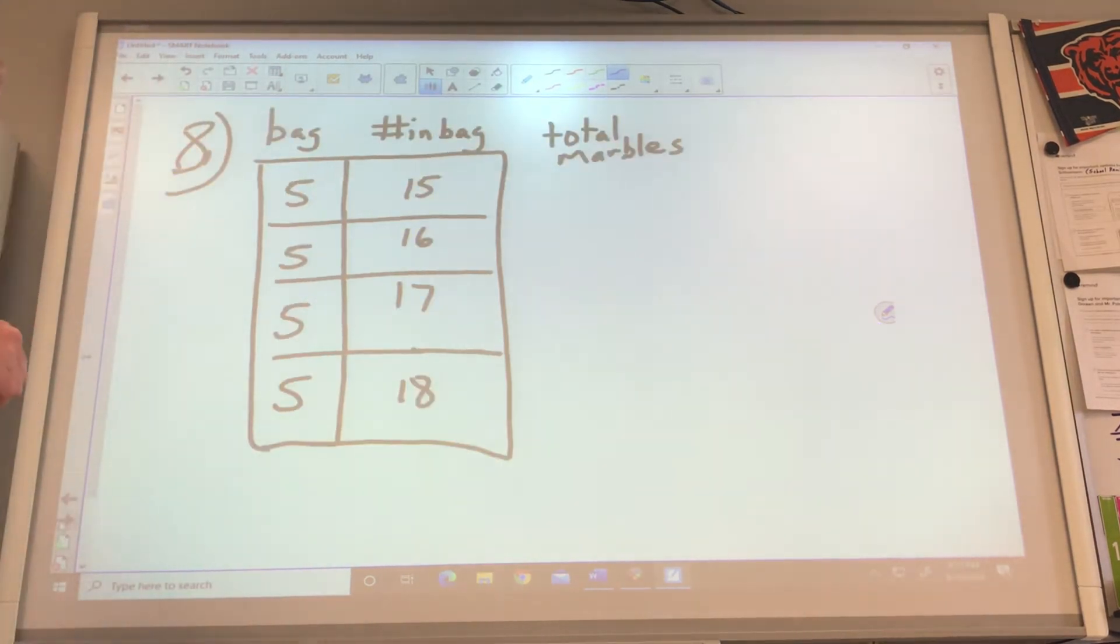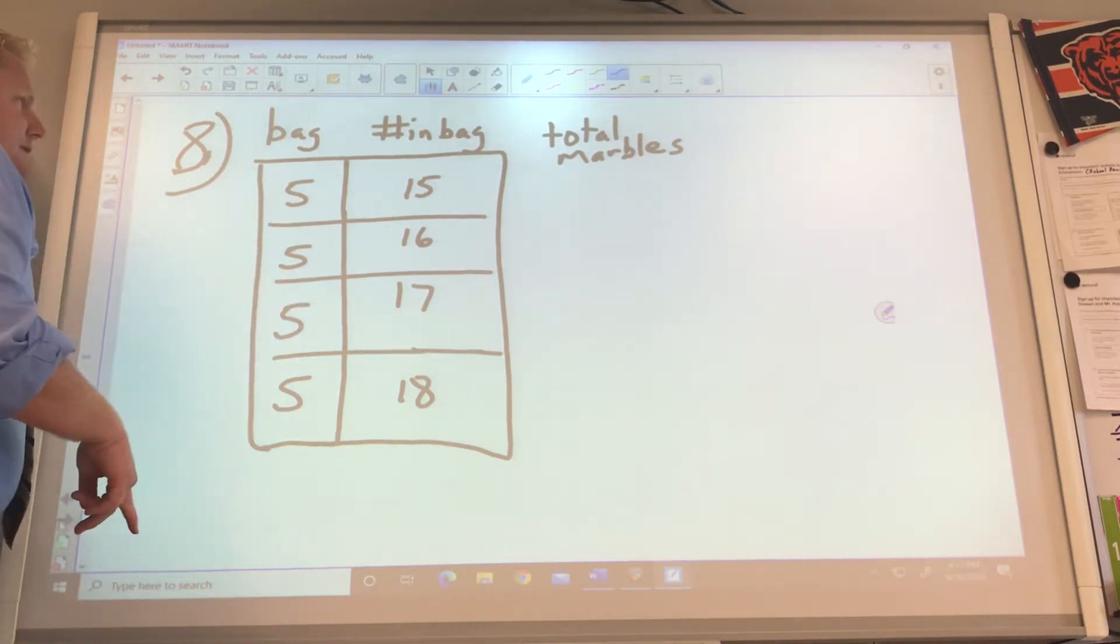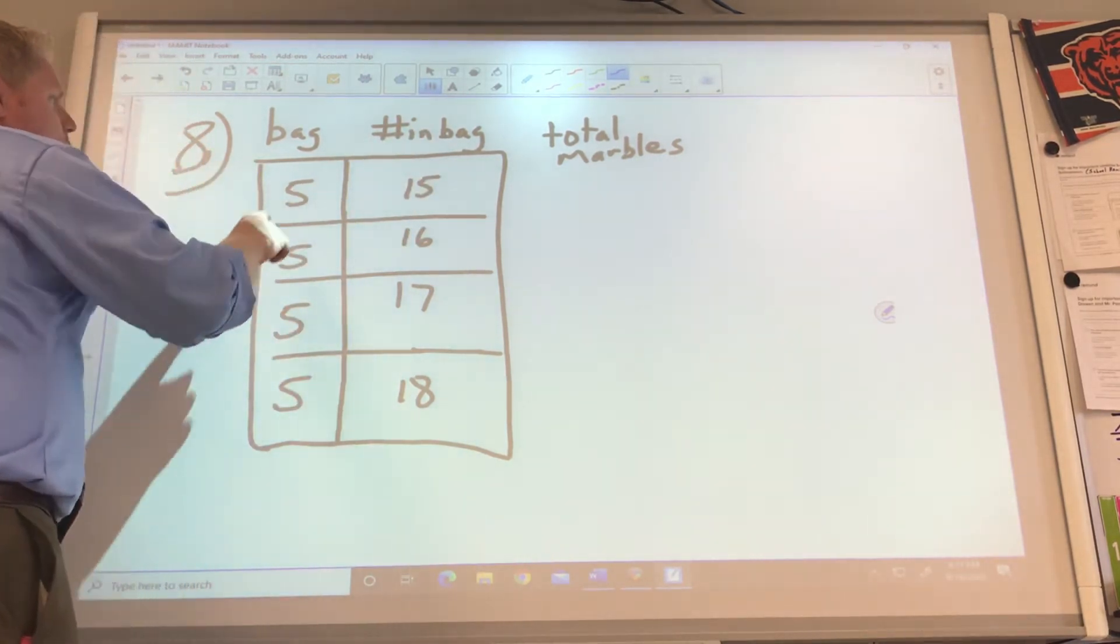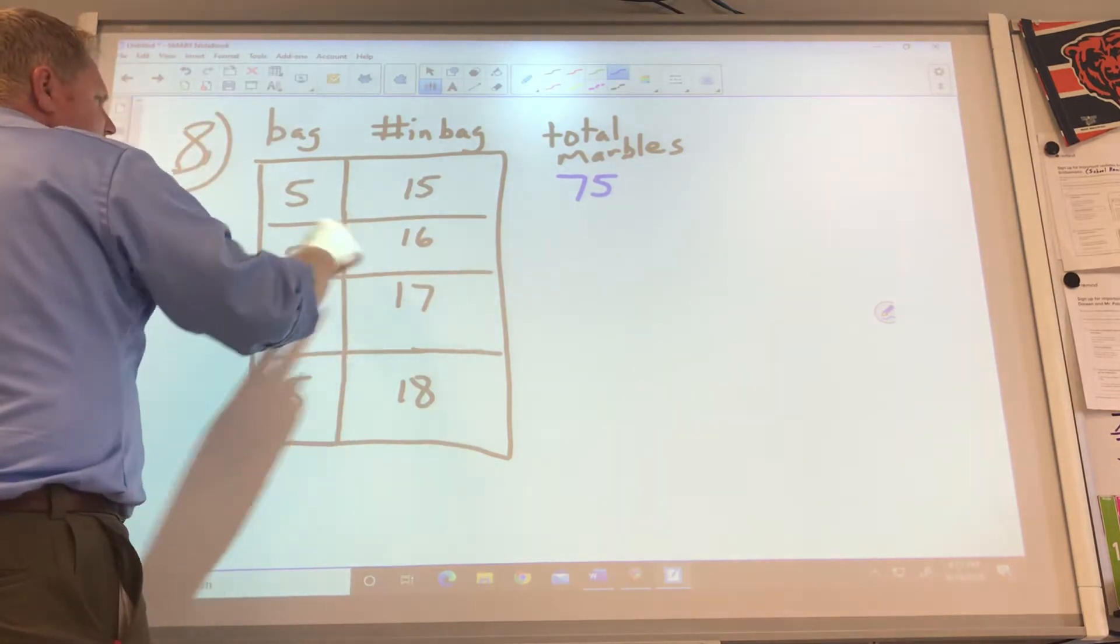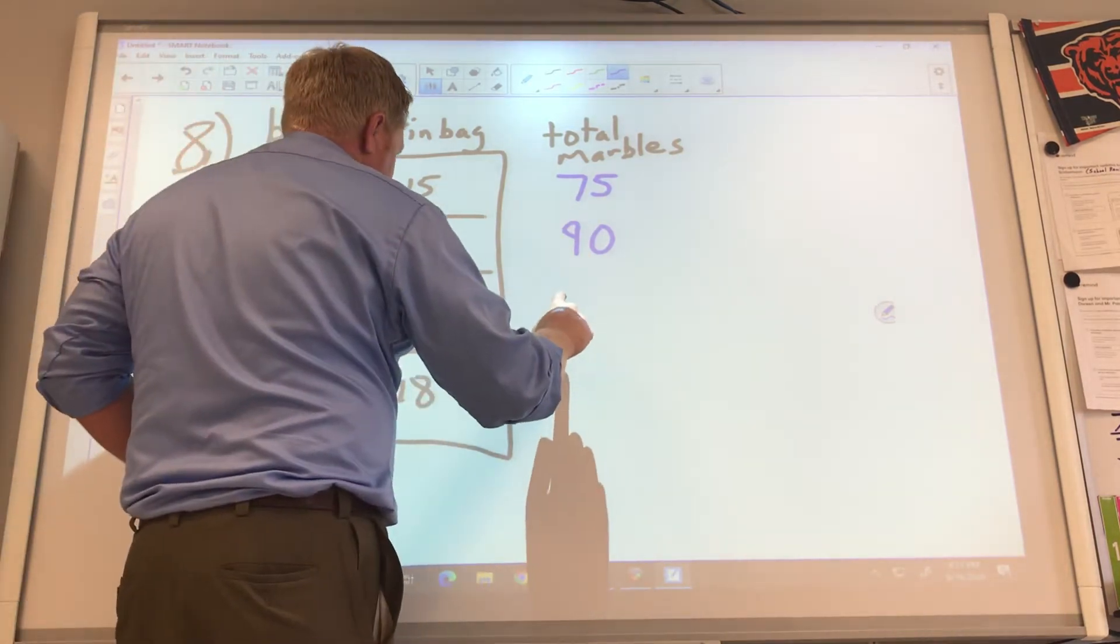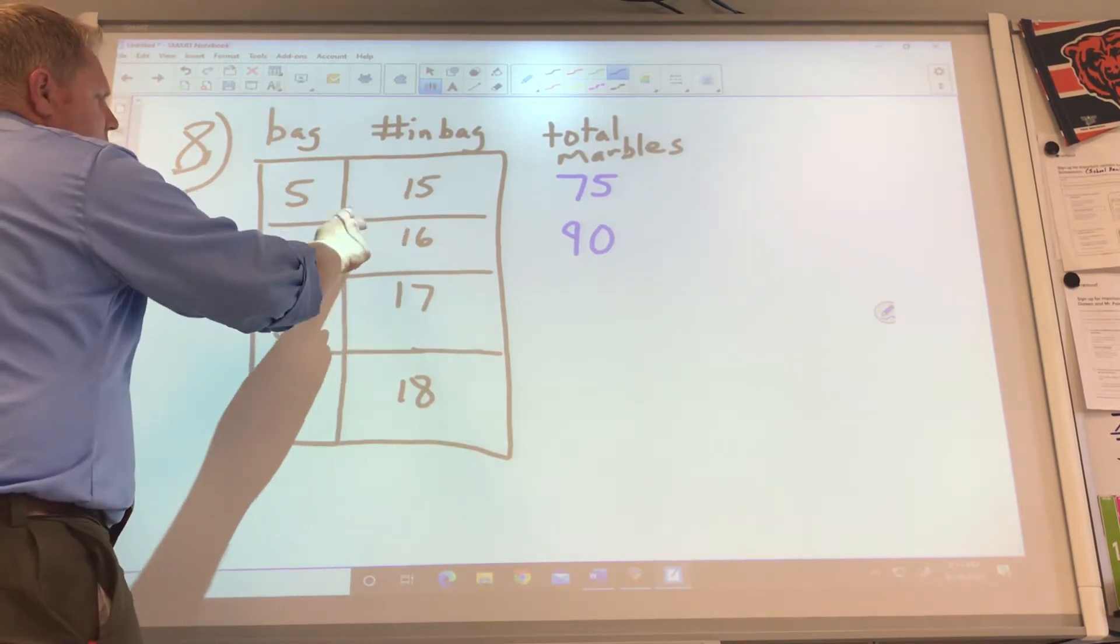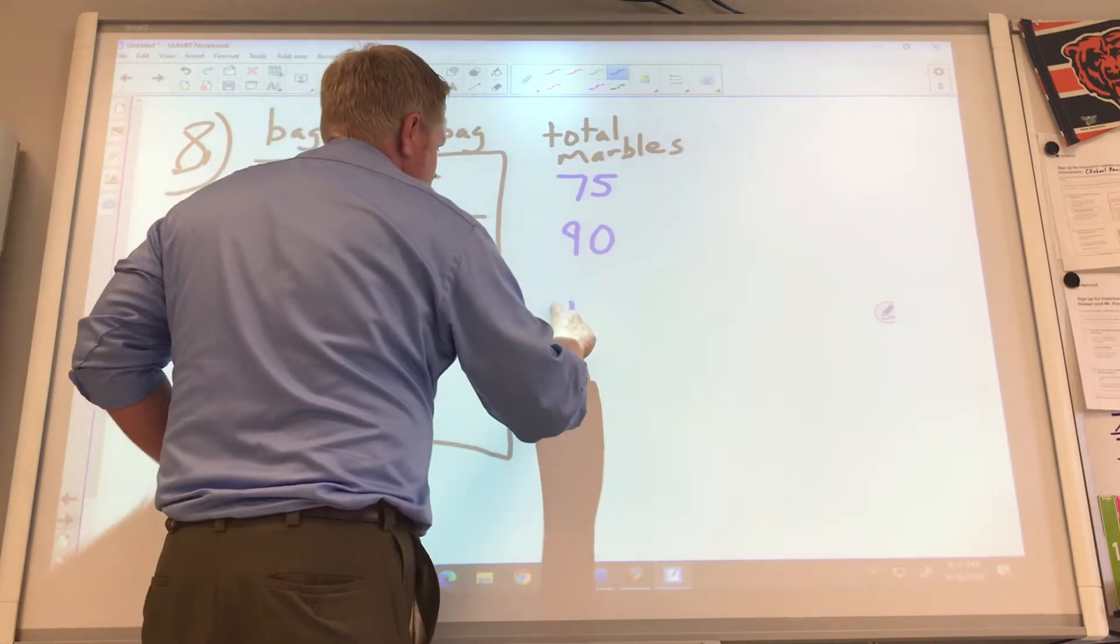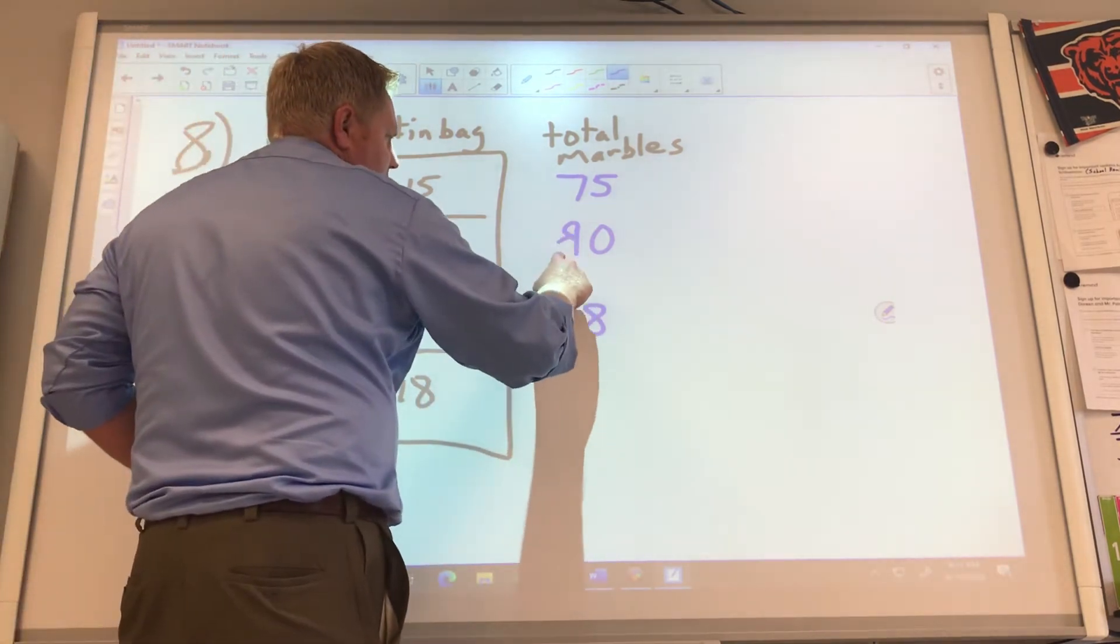Next problem, number 8. They were pretending bags of marbles. There are 5 bags always, but then there are the number of marbles in the bag. If we have 15 marbles in a bag, well, 5 bags with 15, 5 times 15 is 75 marbles. If we have 16, we're going to have 90 marbles. 17 would be 105 marbles. No, that doesn't seem right. That would be 30, that would be 90. Okay, that would be 35.